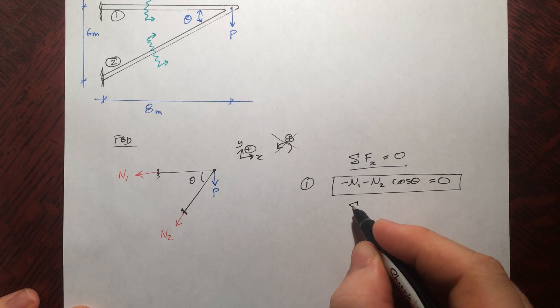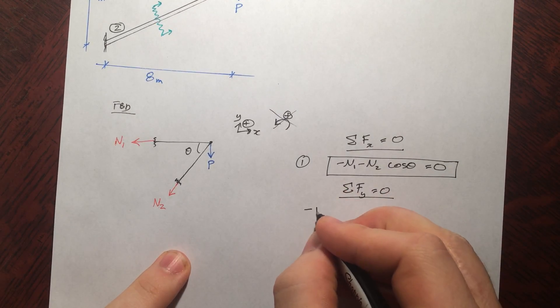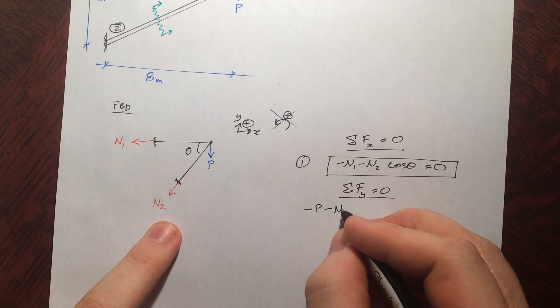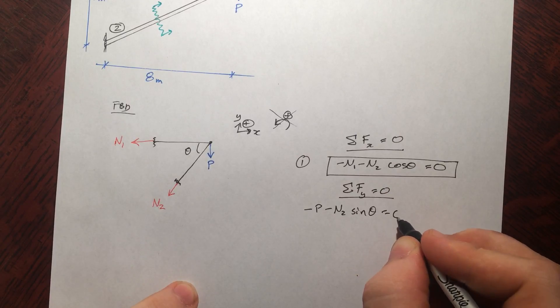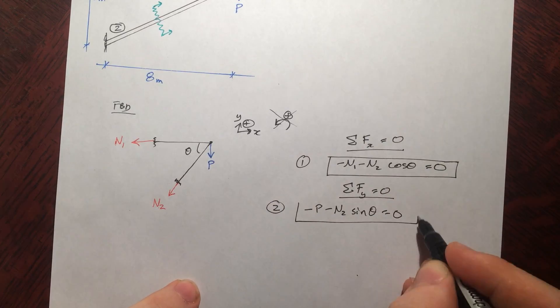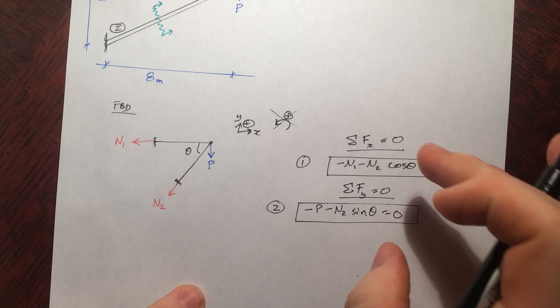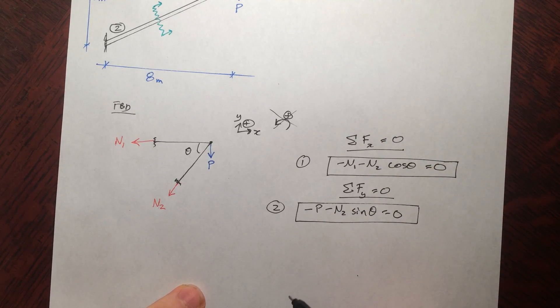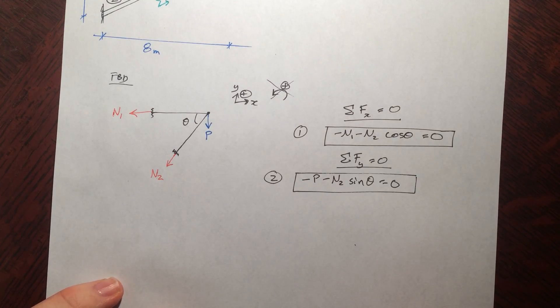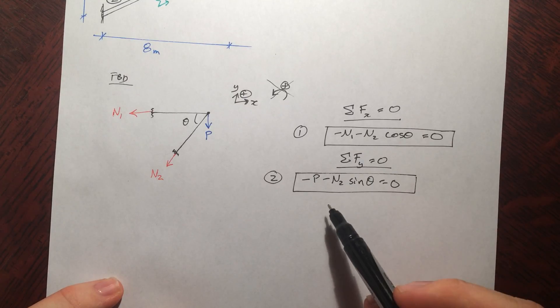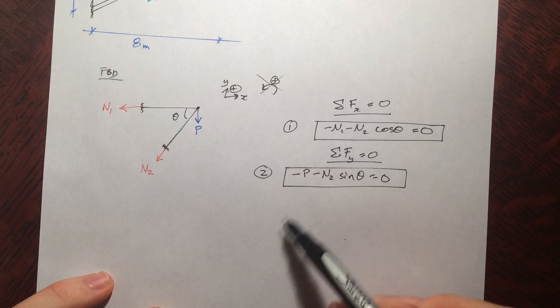Alright, so we do our equilibrium equations. We could do a moment equation, but that's not going to tell us anything in this situation. And then we take a look at how many unknowns we have and see if we can solve just with those equations of equilibrium. And it turns out here we can't. N1, N2, theta. We don't know theta.